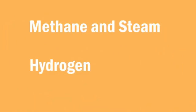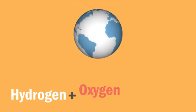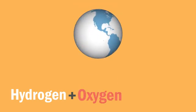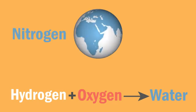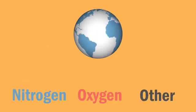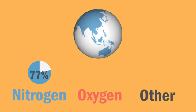Hydrogen is obtained from the reaction of methane and steam, producing carbon monoxide as a by-product. The hydrogen produced from this reaction also reacts with oxygen from air, producing water and leaving nitrogen behind. Recall that air is 77% nitrogen.